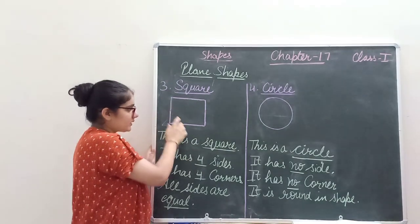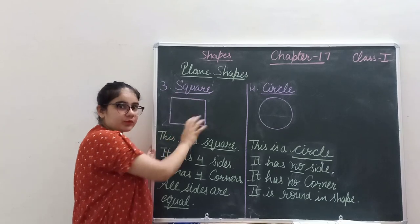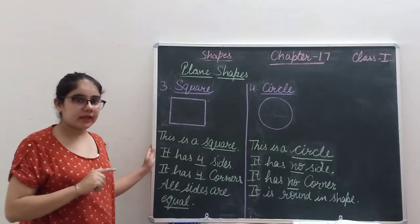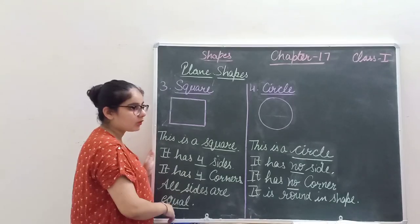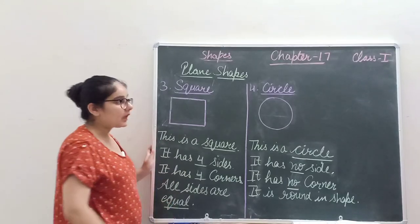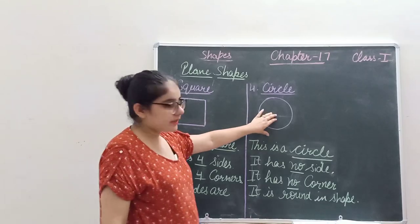That means this, this, this and this, all four sides are equal. In rectangle only opposite sides are equal, and in square all four sides are equal. Now come to next shape.